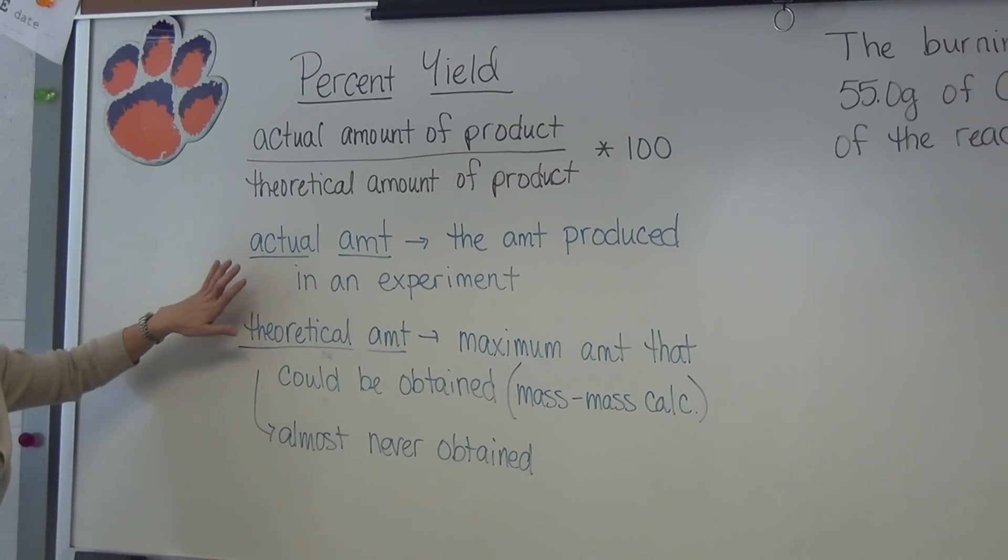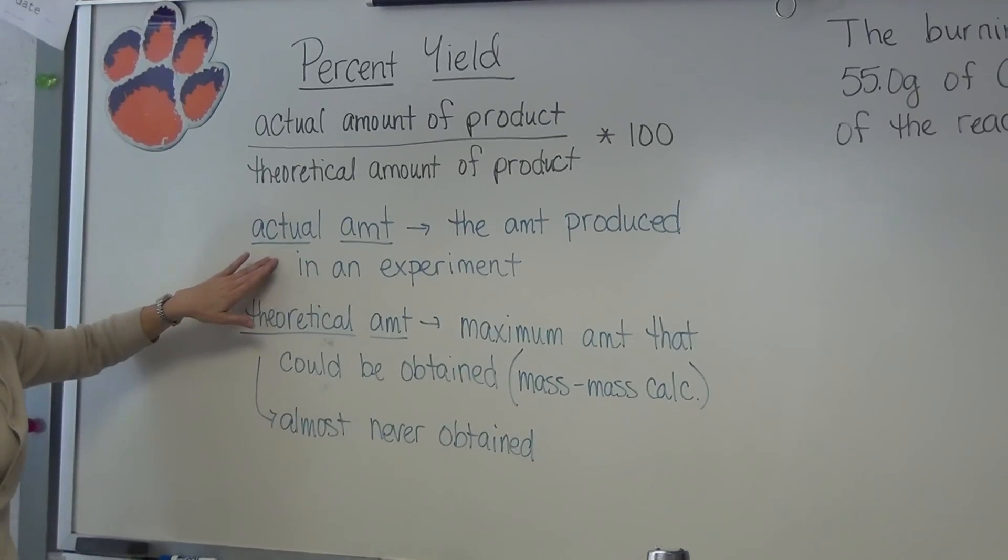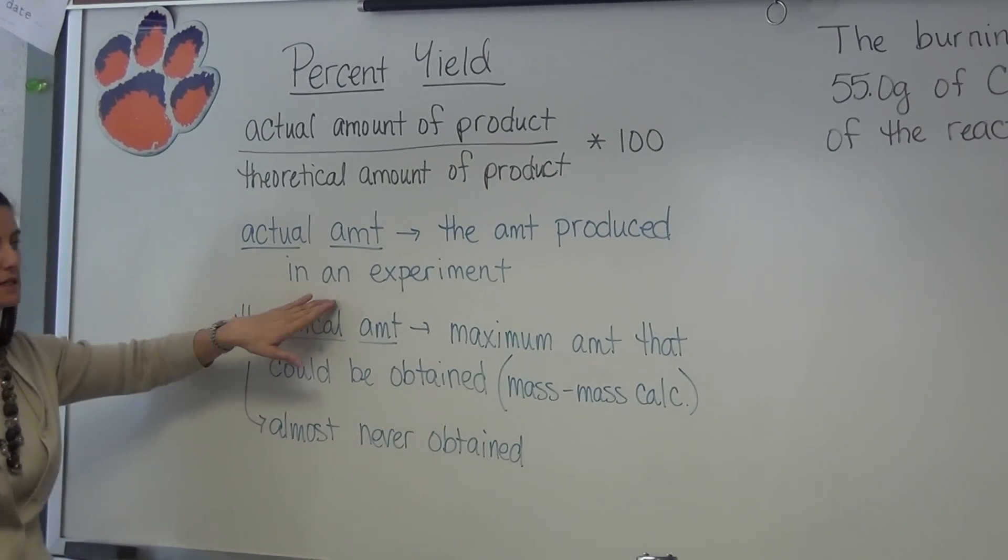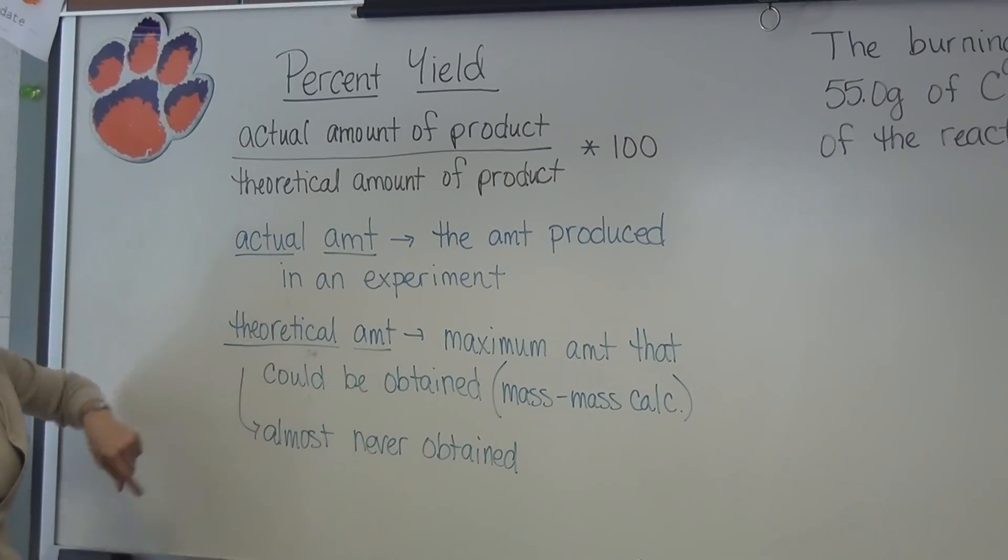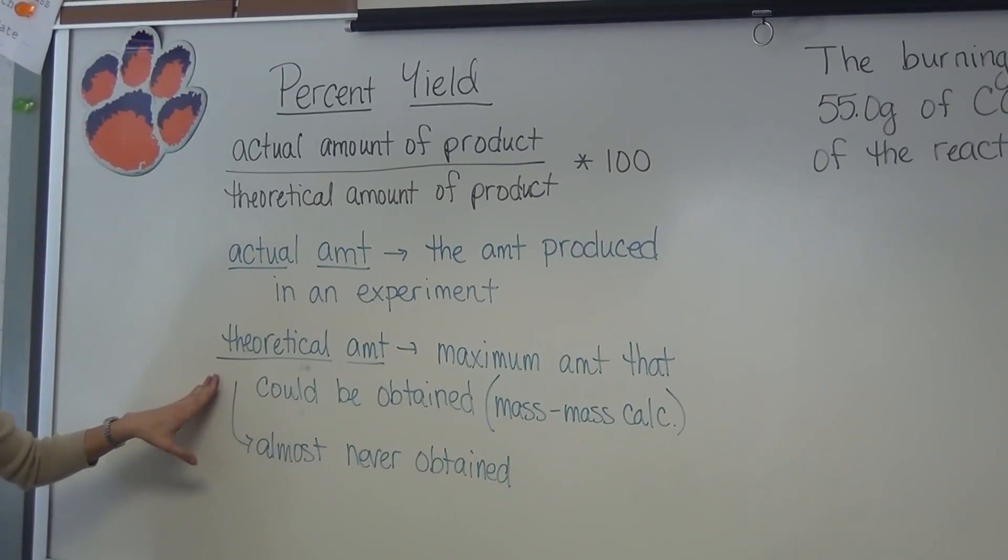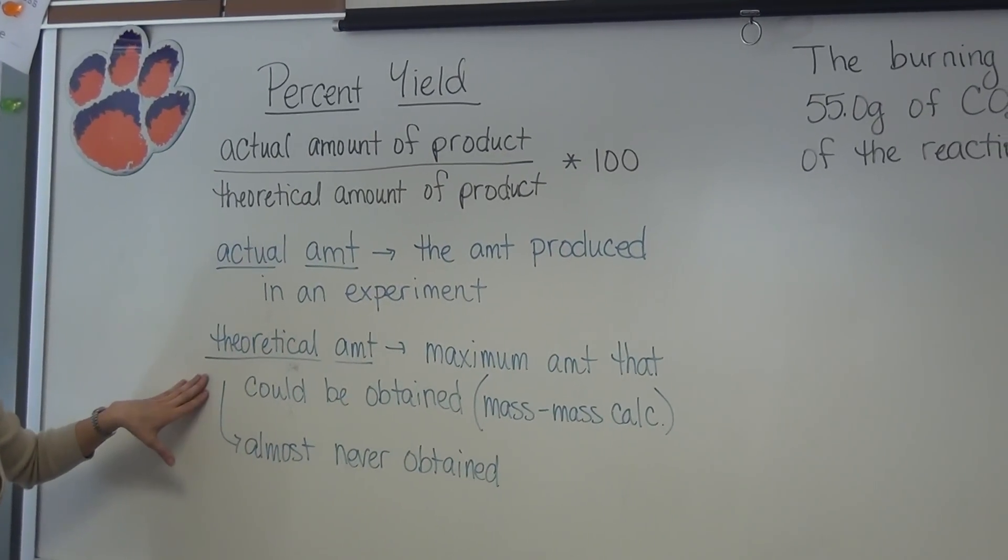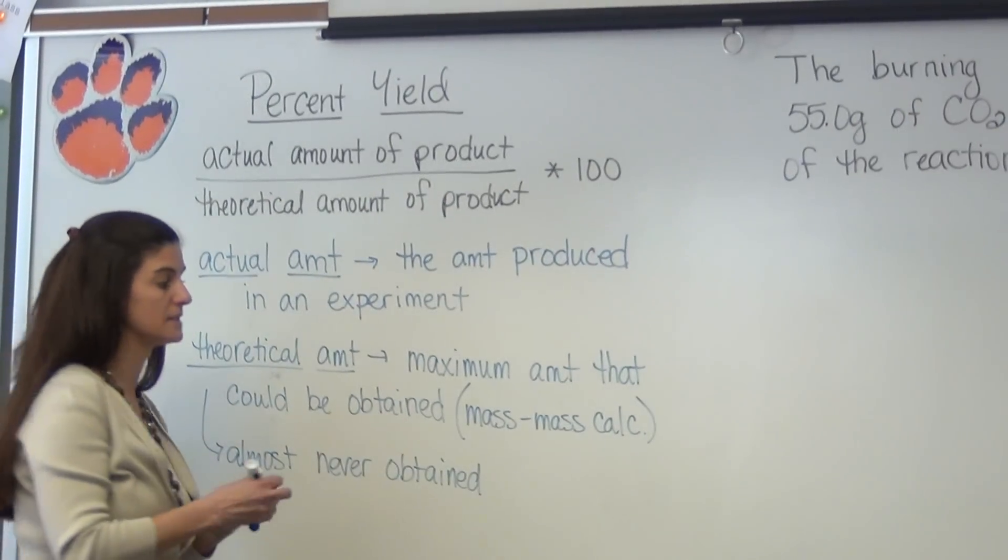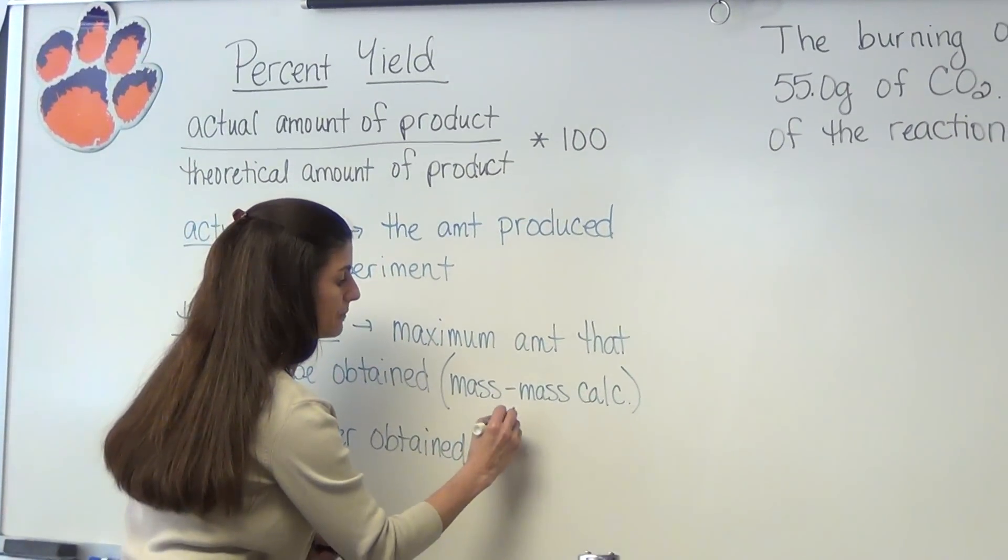So we've got to look at what actual amount is. The actual amount is how much you're going to produce in the experiment when you do it. Theoretical amount is maximum amount that could be obtained and you do that with a mass-to-mass calculation. This is when we have our stoichiometry problems.